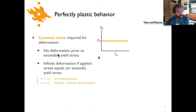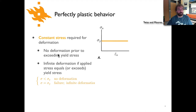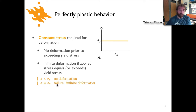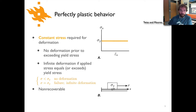There is no deformation prior to reaching the yield stress. Unlike elastic behavior where we saw a linear relationship between stress and strain, here until you reach the yield stress there is no deformation. Once you reach that yield stress you can deform the material an infinite amount as long as the stress equals or exceeds the yield stress. Mathematically: if the stress is less than the yield stress there is no deformation; if it equals the yield stress we have failure in the rock or fracturing and an infinite amount of deformation is possible.